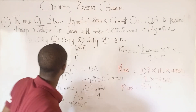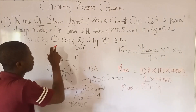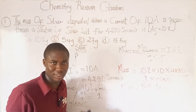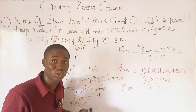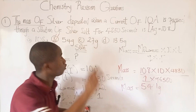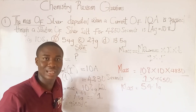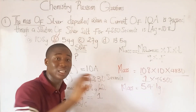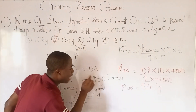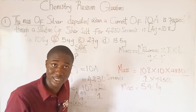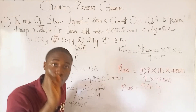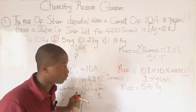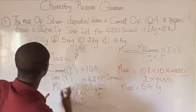Looking at all the options, the answer 54.1 grams matches option B, which is 54 grams. That's how questions like this are solved without stress. One important note: whenever solving electrolysis questions, always make sure your time is in seconds. If the time is in minutes or hours, convert it to seconds first.